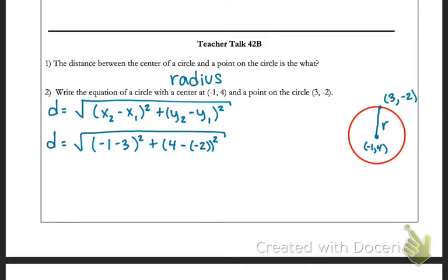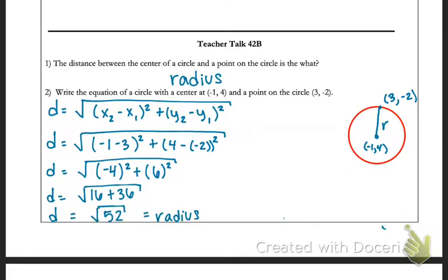Then what we're going to do is solve algebraically. We're going to get negative 4 squared plus 6 squared. And from there, combining our like terms and solving, we're going to get the square root of 52 as our radius.